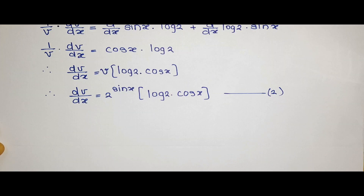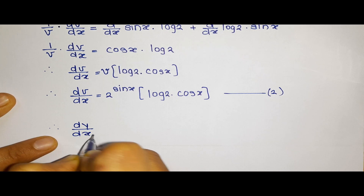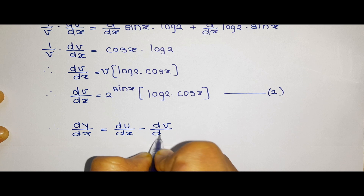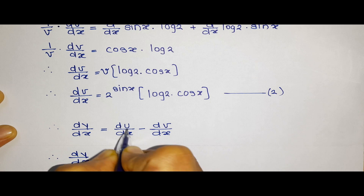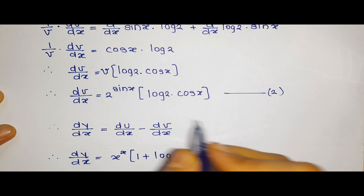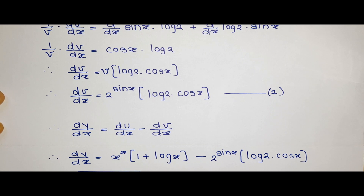Now that we have both sub-parts, we resubstitute the values into the main equation: dy by dx is equal to du by dx minus dv by dx. Therefore, dy by dx is equal to x raised to x into 1 plus log x, minus 2 raised to sin x into log 2 into cos x. This is our final answer, as we cannot simplify it further. Thank you, and don't forget to comment down your doubts and thoughts so we can address them in upcoming videos.